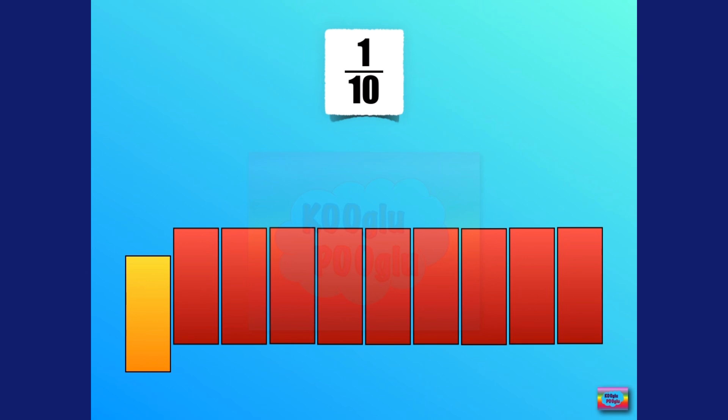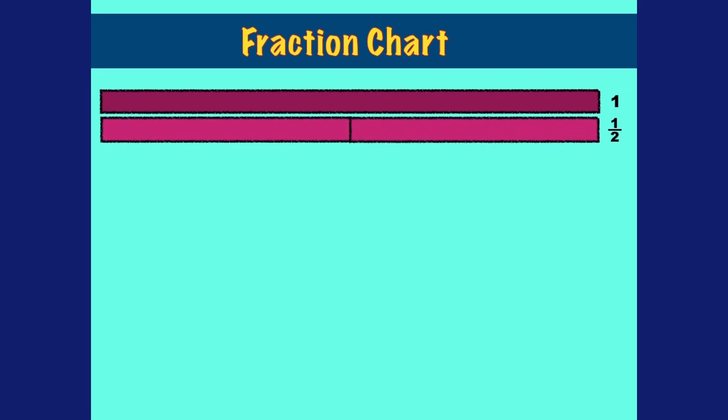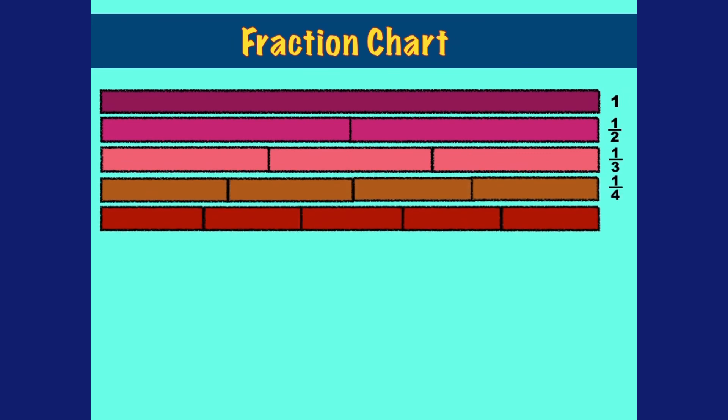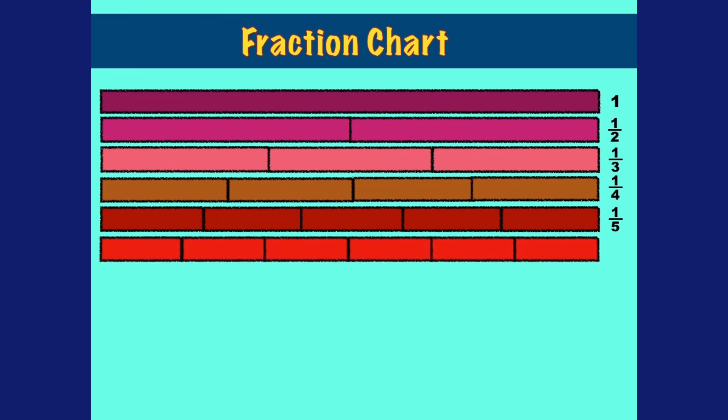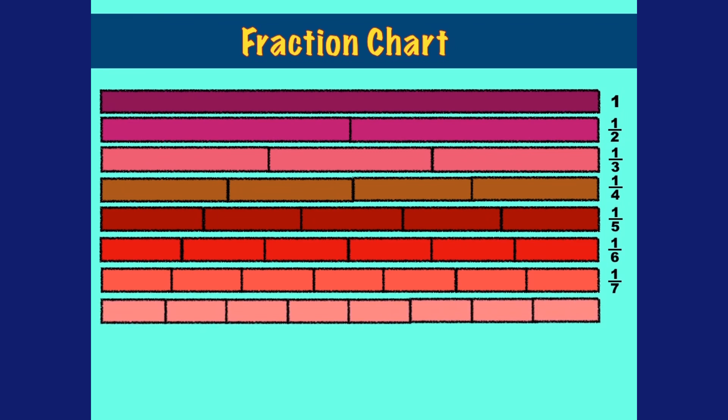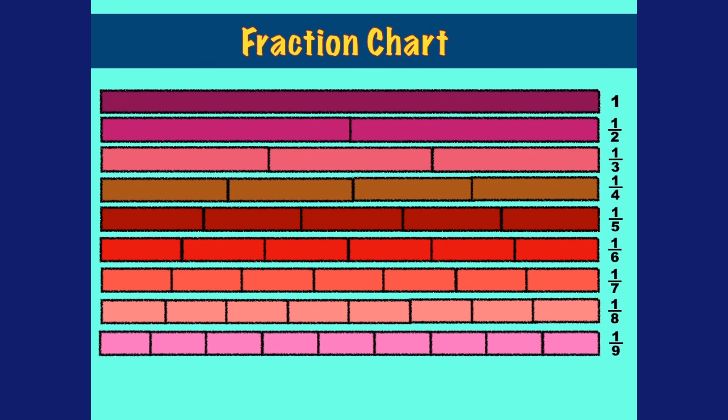Here we have a fraction chart. Here's one whole. That's a half, which is divided into two parts. Third into three equal parts. Here we have one fourth into four equal parts, one fifth into five equal parts, one sixth into six equal parts, and then so on. One seventh, one eighth, one ninth, and last but not least, one tenth. That means the one has been cut up into all these equal parts. Bye bye!